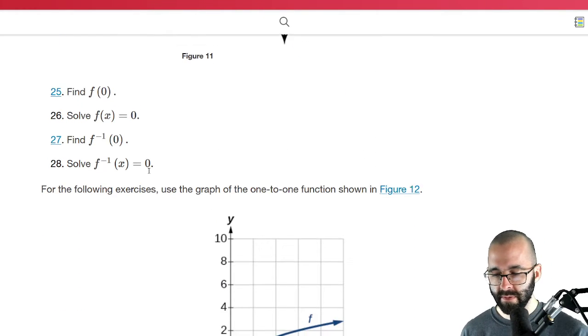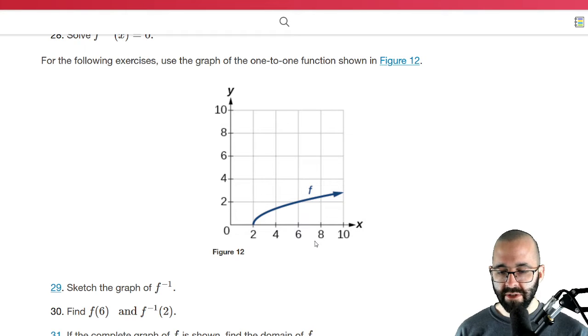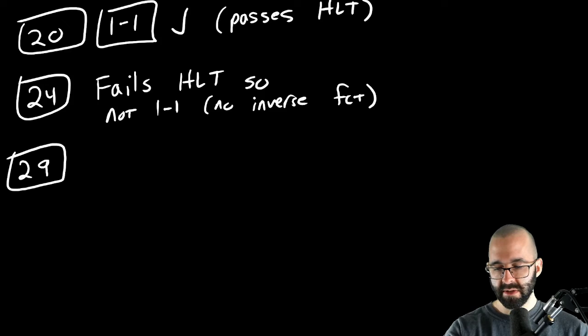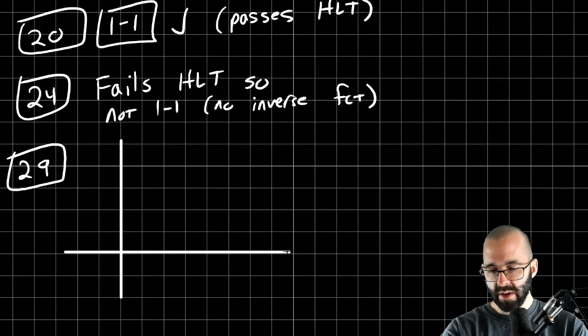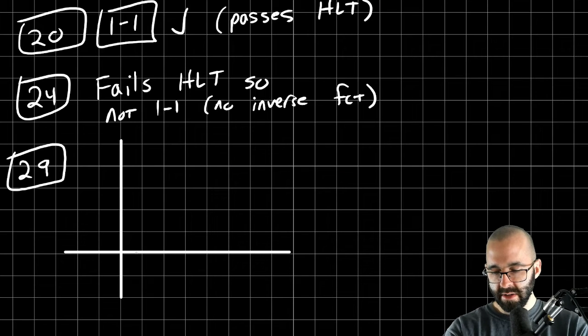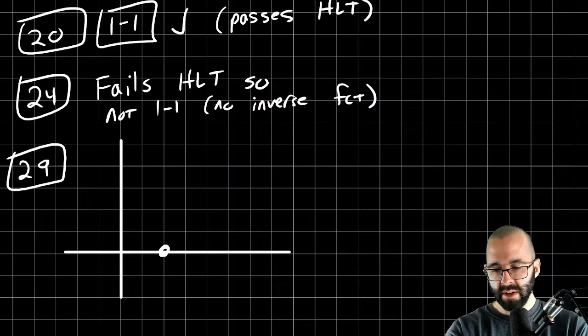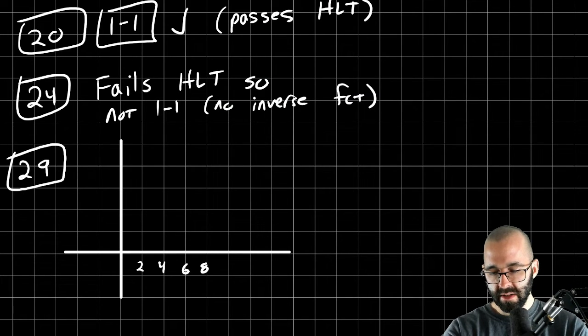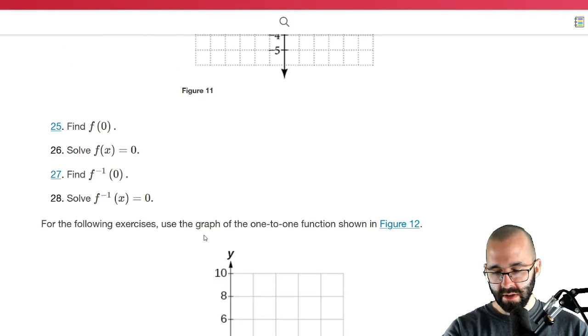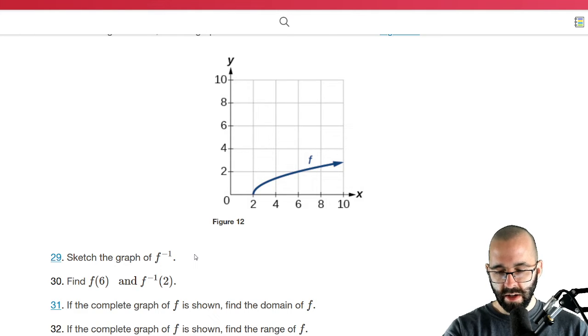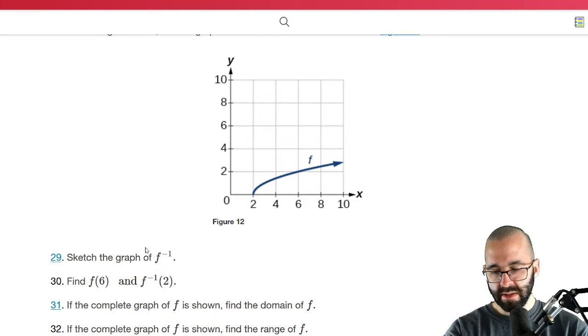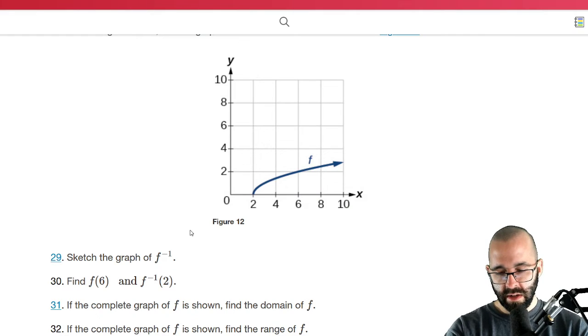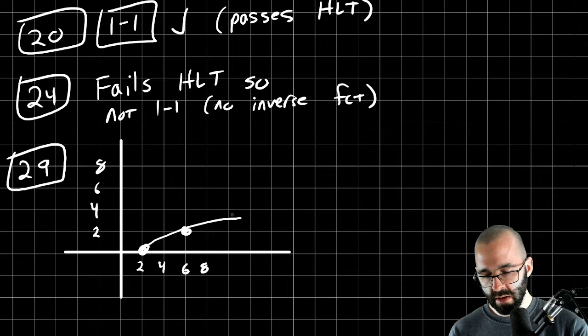Let's see 29. 29 says sketch the graph of F inverse. Let's copy down this graph first. The given graph starts at two comma zero. Let's use the same units, right? This would be 2, 4, 6, 8. Using the same scale is going to make things a lot easier to copy down. So it starts at two comma zero, it passes through six comma two. And that's the only easy thing to see. Just give it the same shape.